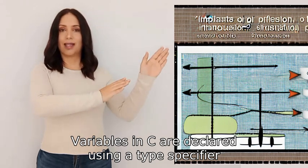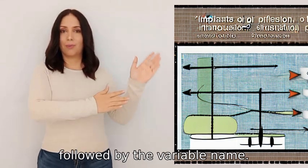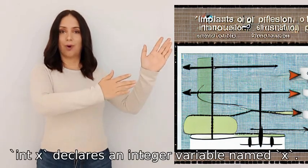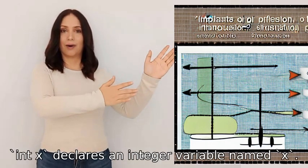Variables in C are declared using a type specifier followed by the variable name. For example, int x declares an integer variable named x.